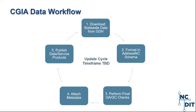This is the envisioned workflow for CGIA to create and publish the data updates. We'd start by downloading statewide data coming out of the GIS Data Hub and formatting it in the AddressNC schema. We'd perform any final QA/QC and completeness checks, fill in any gaps, attach the metadata record, and publish the data and services. At that point, we would also be ready to provision the data to the National Address Database.